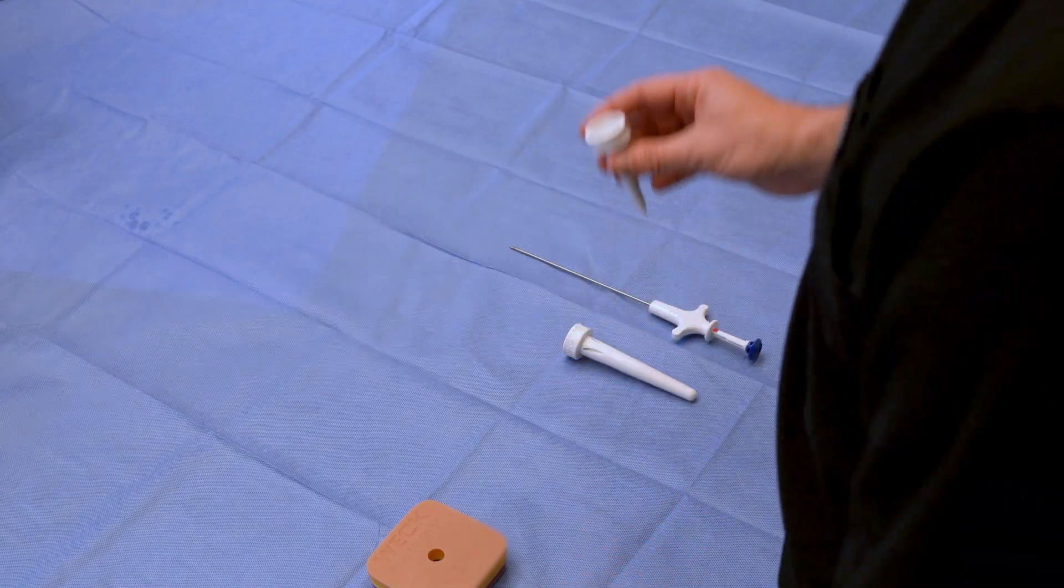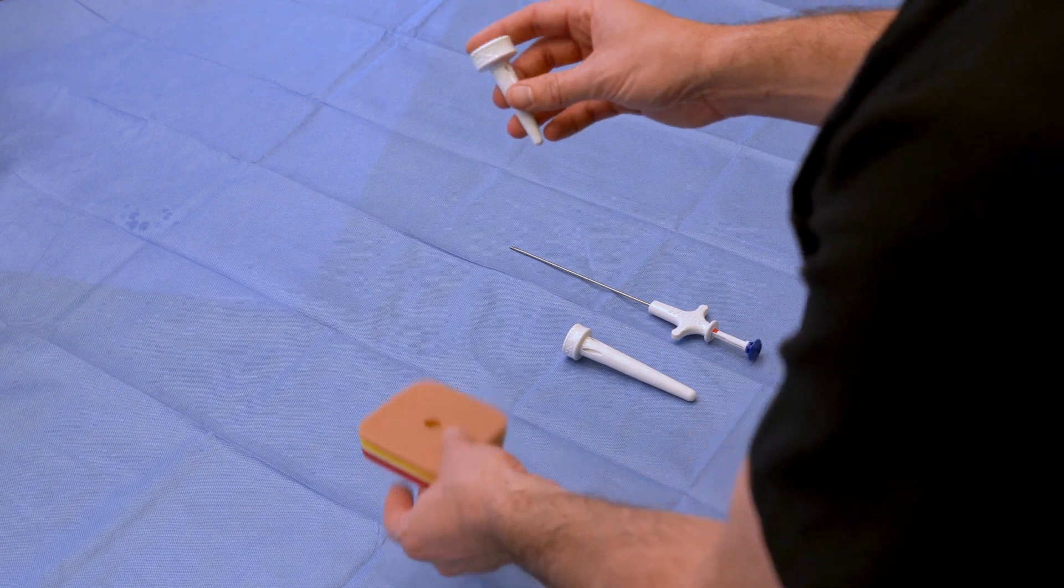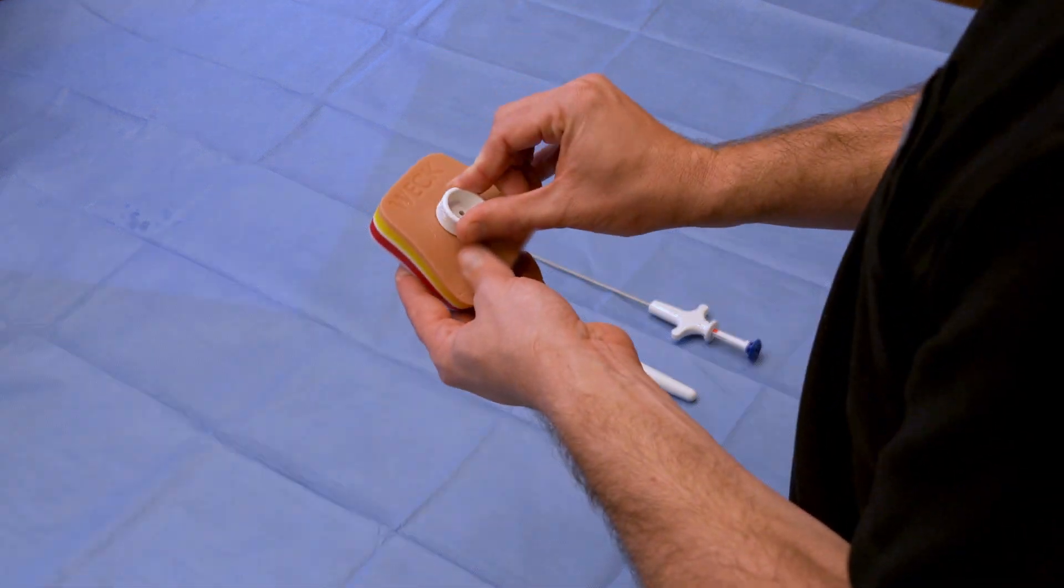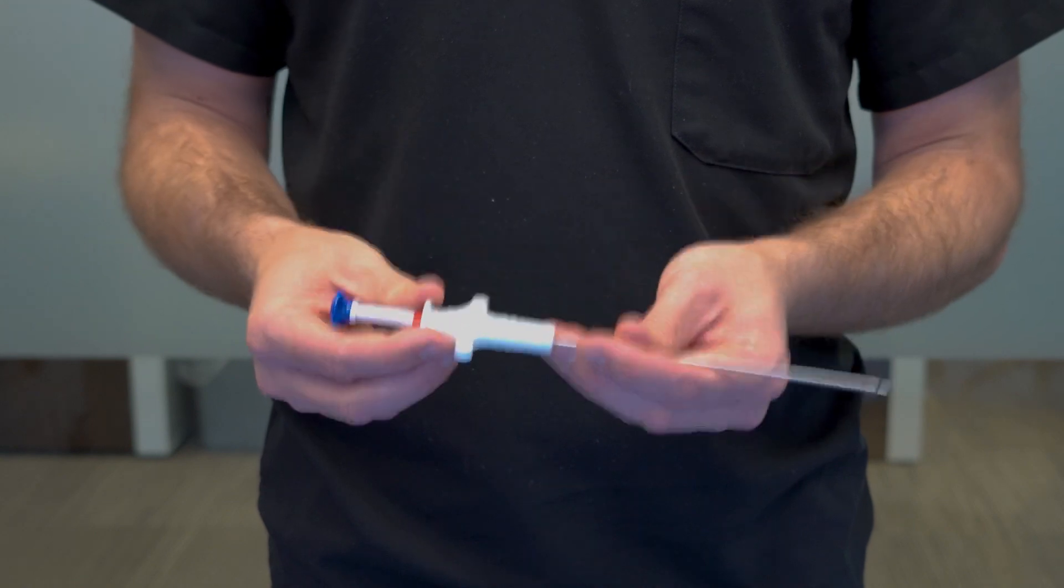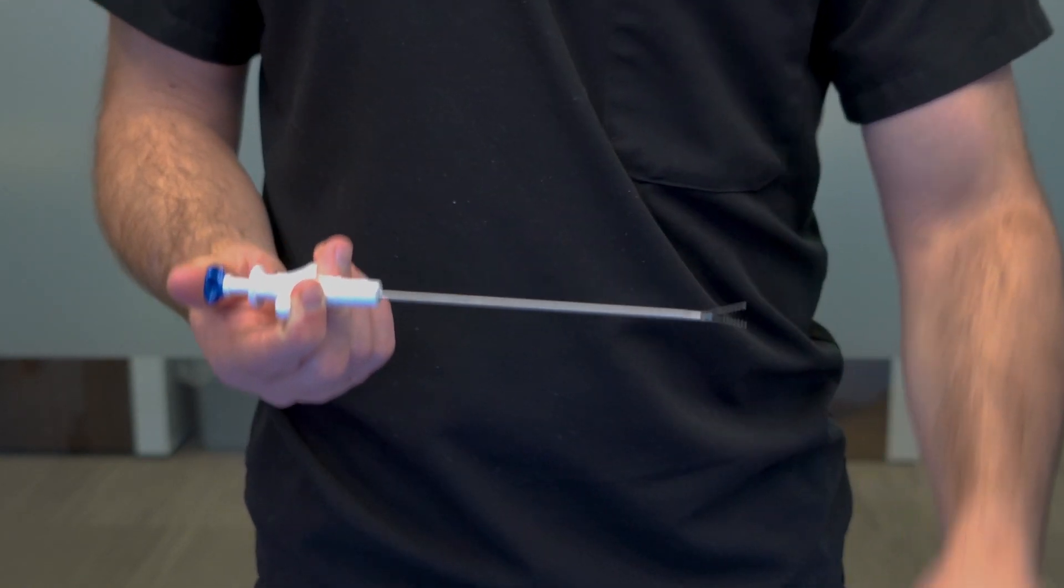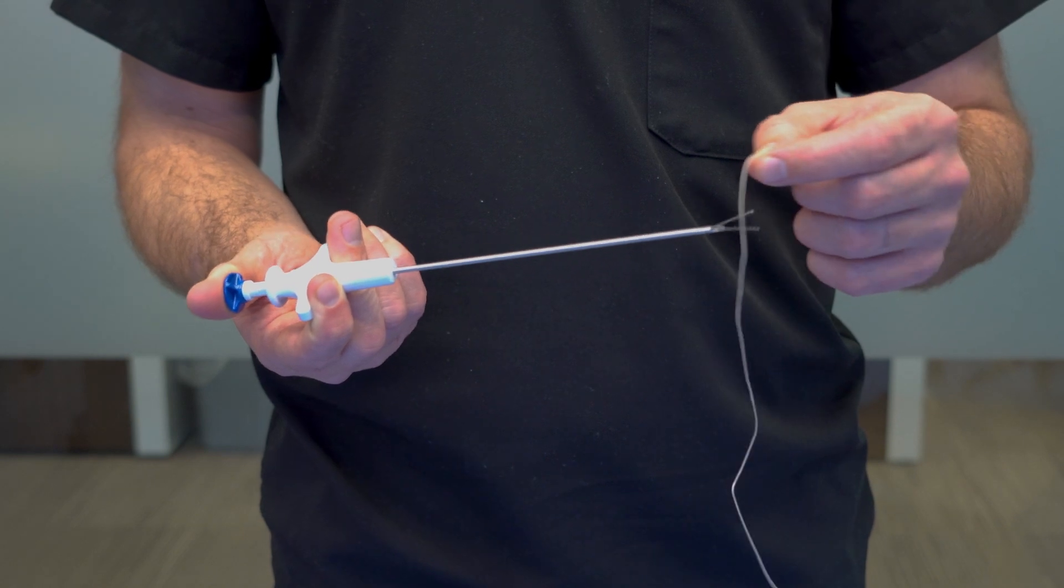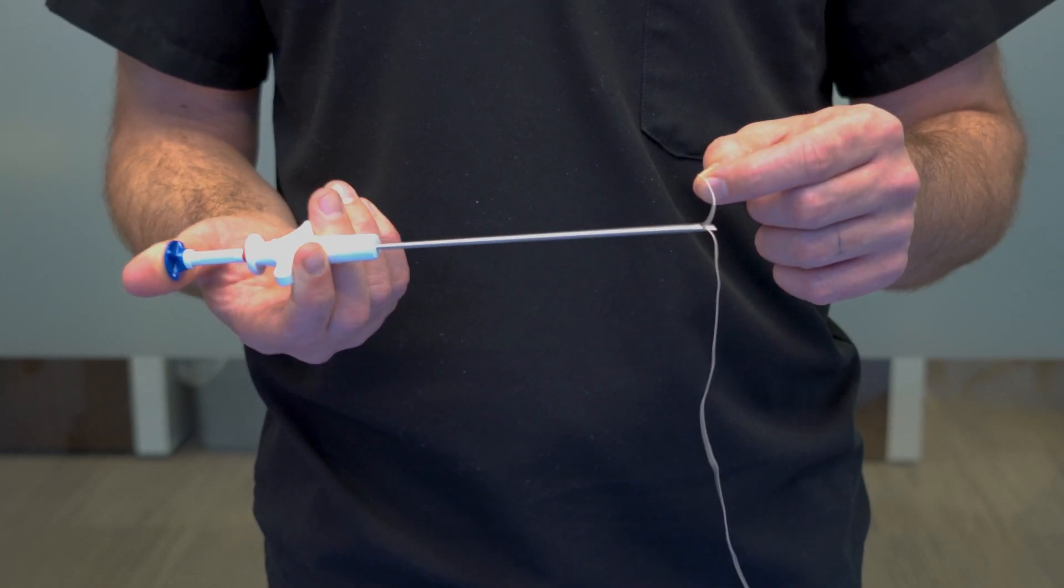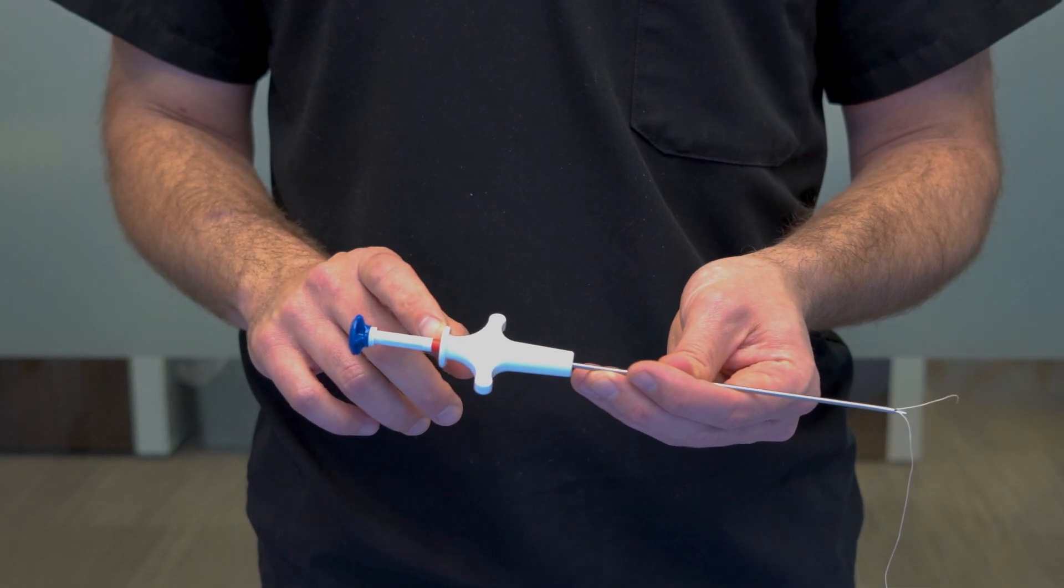Place the appropriately sized pilot guide in the fascial defect. Open the jaws by pressing the button. Place the suture in the jaws. Close the jaws by releasing the button. Ensure the red band is showing.